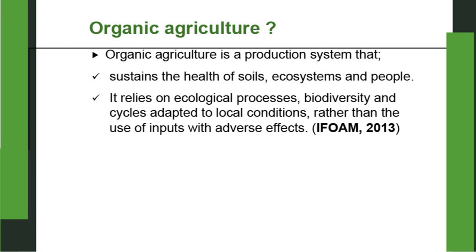Another definition from IFOAM — International Federation of Organic Agriculture Movements, with headquarters in Bonn, Germany (2013): Organic agriculture is a production system that sustains the health of soils, ecosystems and people. It relies on ecological processes, biodiversity and cycles adapted to local conditions, rather than the use of inputs with adverse effects. It does not use any input that will have adverse effect on soil, plants, human beings or the ecosystem — that is a complete definition of organic farming.